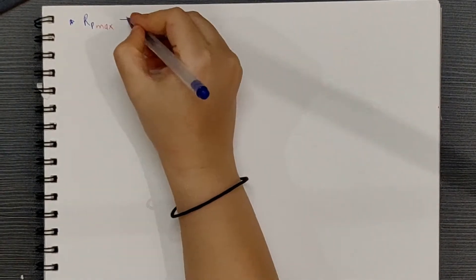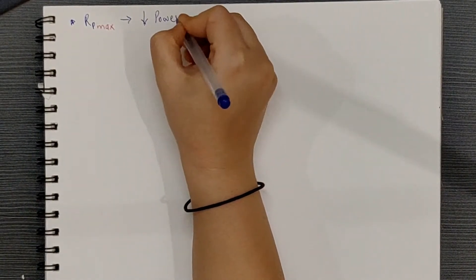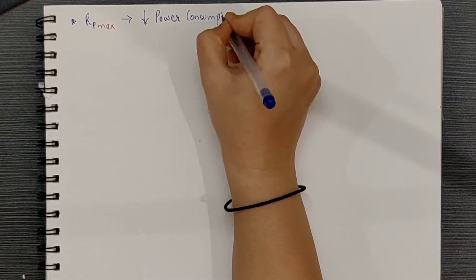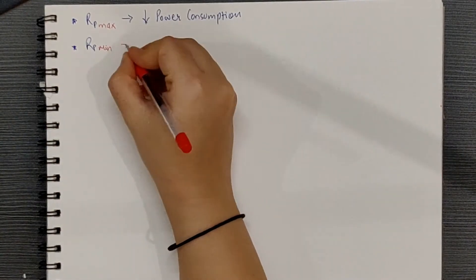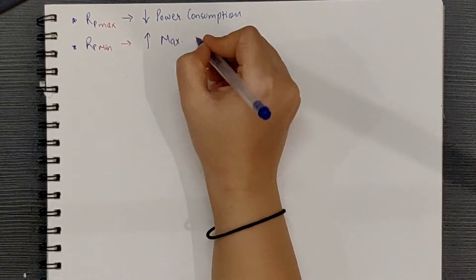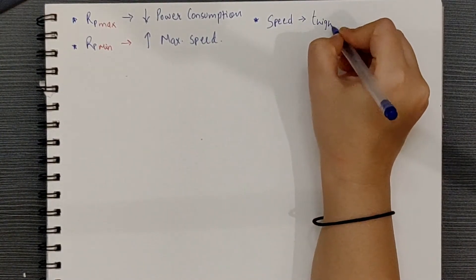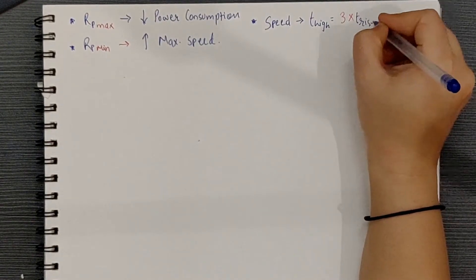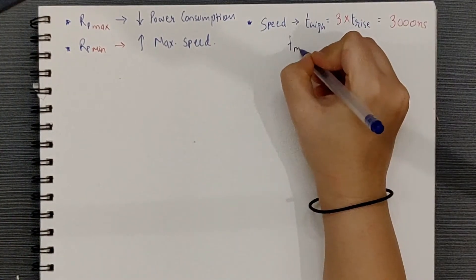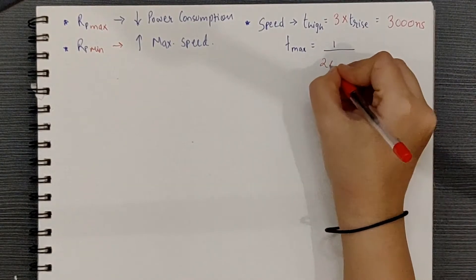So, this particular maximum value gives you minimum power consumption and the minimum value gives us maximum attainable speed value. We can also calculate or make approximation of speed. If you want the clock high time to be, say, at least thrice the rise time, then you will have T high equals to 3000 ns.